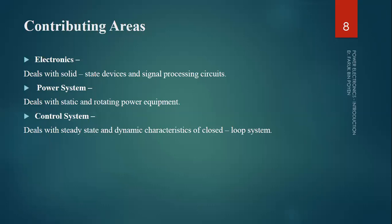Either it can be an AC motor or a DC motor. Take the example of a normal water motor used at home to pump water — the unit is in HP, that is horsepower: 1 HP, 0.5 HP, 1.5 HP, 2 HP. Power systems contribute to both static and rotor power equipment. Then the control system deals with steady state and dynamic characteristics of the closed loop system. In the fourth semester, we learn about two important things: the closed loop system and the open loop system.